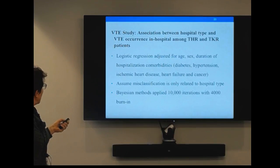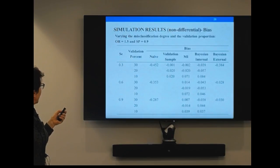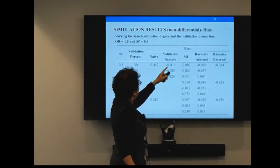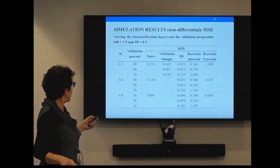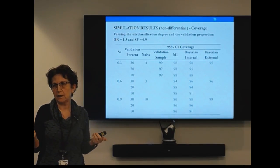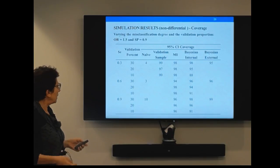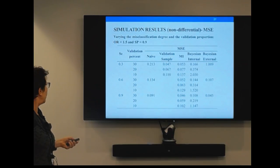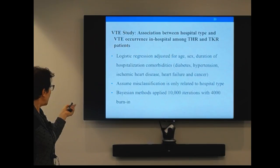At the end we compare, because we started with a true odds ratio and then have the estimated odds ratio from the different methods. Subtracting the two gives us bias: truth minus estimated. We also calculate mean square error — the square of the bias plus the variance from the data. And we calculate coverage: does the 95% confidence interval capture the truth, and how often? Does it capture it 95% of the time? These are our measures of good performance.